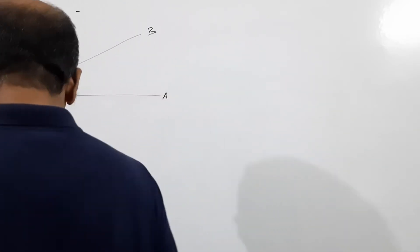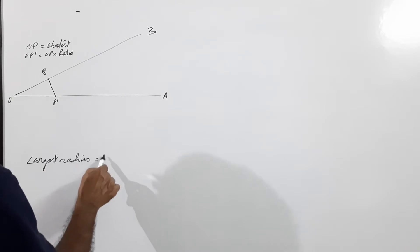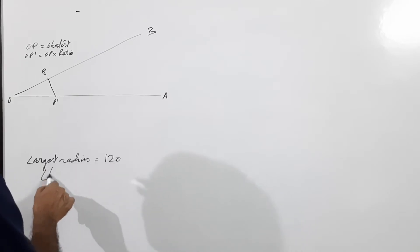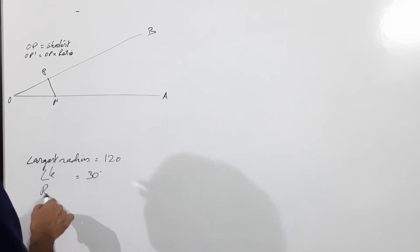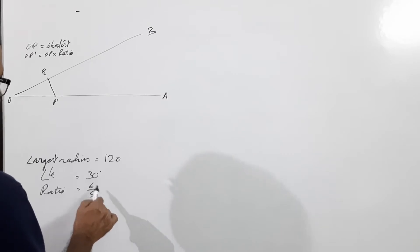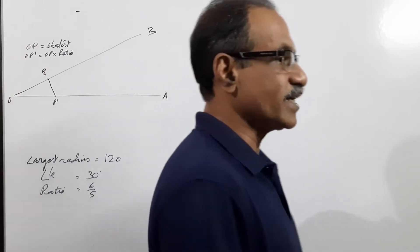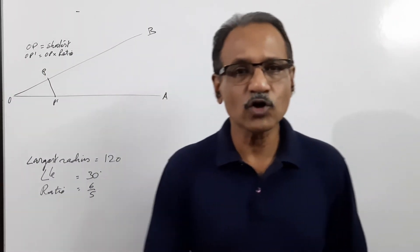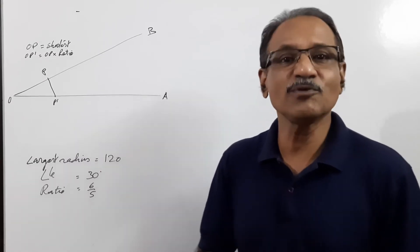The problem: largest radius is given 120mm, angle between successive radii 30 degrees, ratio between successive radii 6 by 5. You are asked to draw the logarithmic spiral. Before drawing that, let me recall the logarithmic spiral where the shortest radius is given.